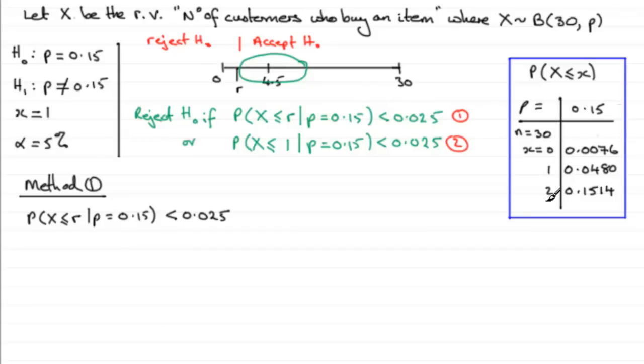So all you've got to do is look up p equaling 0.15 and under n equals 30. You're going to have a list of observed values with their associated probabilities of being less than or equal to your observed value. So from tables, we're looking for the value of R that gives us a probability as close as we can get to 0.025 but less than it.